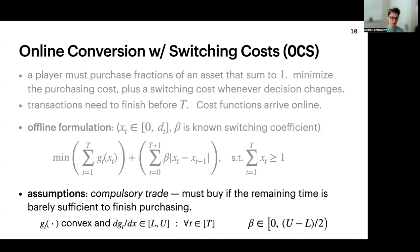We place some assumptions on the problem. First, we have a compulsory trade, which forces the player to buy when the remaining opportunities are barely enough to satisfy the constraint. Second, we assume that cost functions are convex and that their derivatives are bounded in the positive real interval [L, U]. Finally, to make the problem technically interesting, we assume that beta is not too large — formally, that means it is less than (U minus L) over 2.